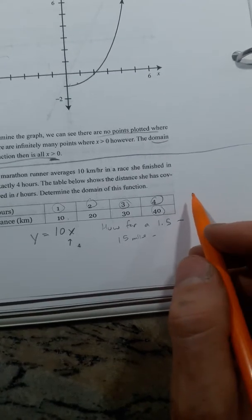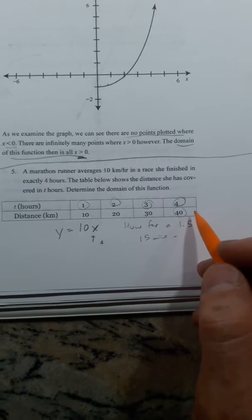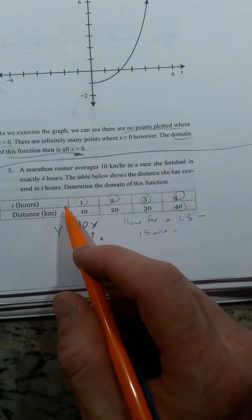He didn't run for 5 hours. So if I plugged in 5, I gave 50 kilometers, and he didn't go that far. But you can choose any number between 0 and 4.